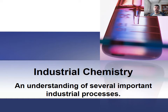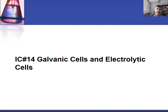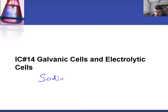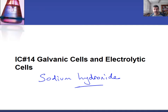Hi students and welcome to HSC Chemistry. This is the topic on industrial chemistry. Today we're going to be looking at galvanic cells and electrolytic cells, and we're doing this in the context of the production of sodium hydroxide. It's the fourth section of the industrial chemistry topic.